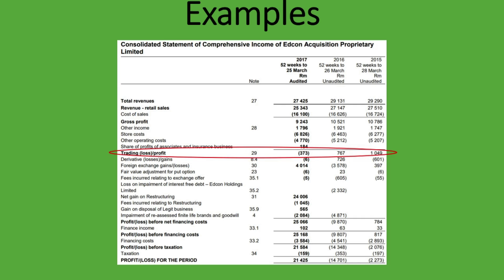Net gain on restructuring, gain on disposal of a business — they don't do this in their usual course of business. These incomes and expenses occur in a very short period before they go back into normal operations. You can see that before arriving at the trading profit or operating profit, these would be their usual expenses, and you'll see these expenses every time you look at their income statements. So the operating profit is the profit after taking into account the operating expenses.